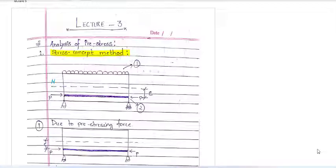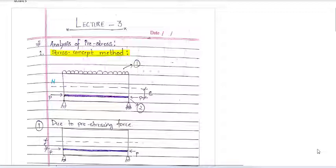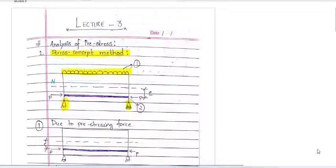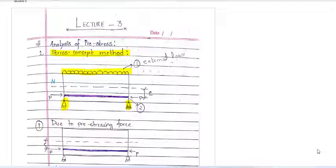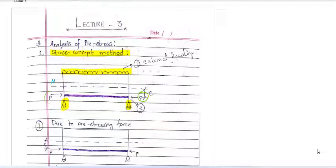Now, how do we calculate stresses in the stress concept method? We have taken a simply supported beam with a hinge support and a roller support. A UDL acts as the external load. There is also a compressive load known as PE, which is due to pre-tensioning.